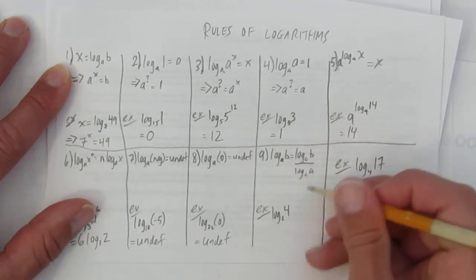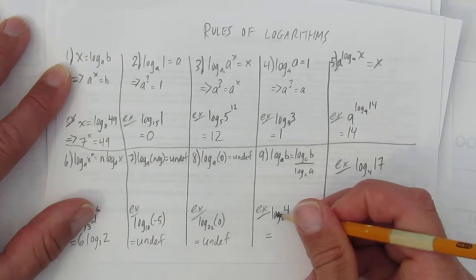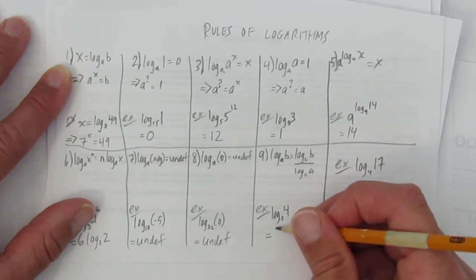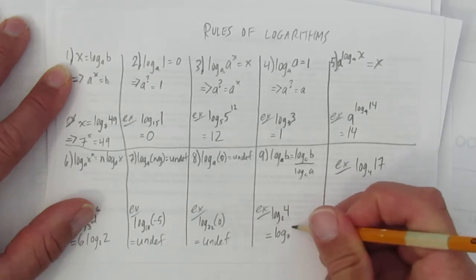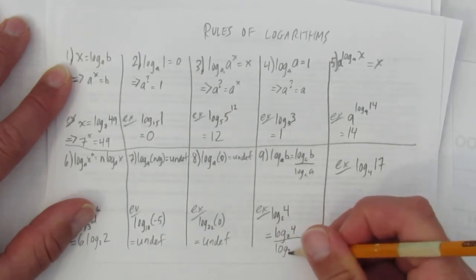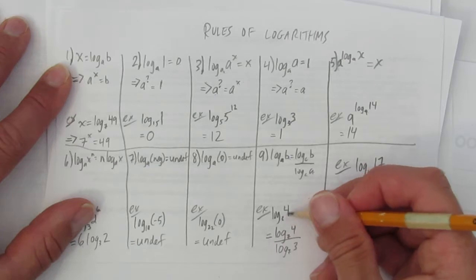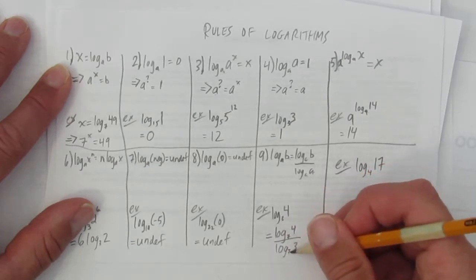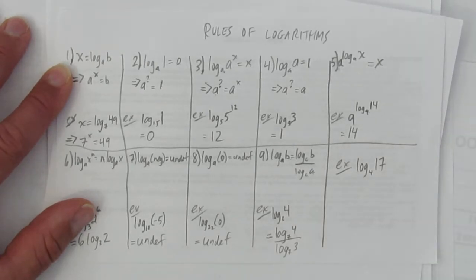Let's look at an example to show you how this algebra works out. It says, for example, let's say you have log base 3 of 4. You could convert that to some other base. Let's say log base 7 of 4 divided by log base 7 of 3. That's what this rule says. When you have log base 3 of 4, you can change it to log 4 over log 3 of any base you want.